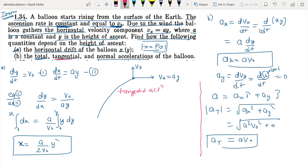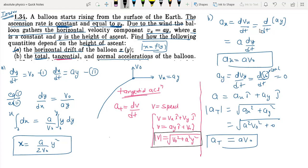Now for tangential acceleration, the velocity vector is vx i cap plus vy j cap, which equals ay i cap plus v0 j cap. We have to find speed, so speed equals square root of v0 square plus a square y square.